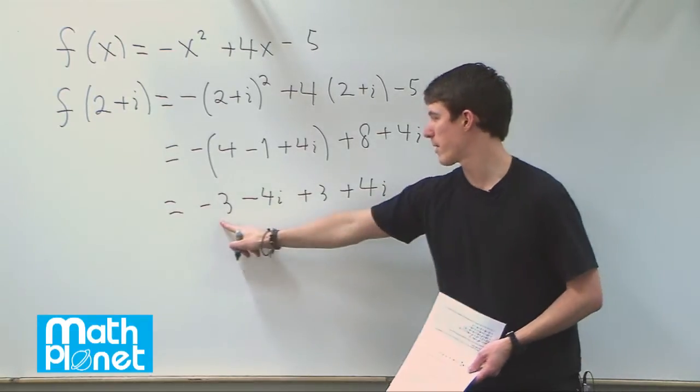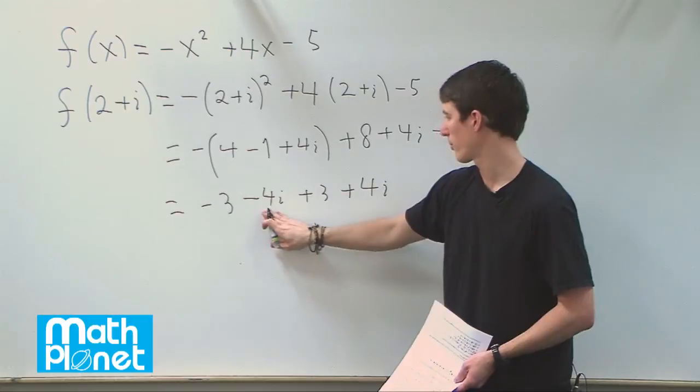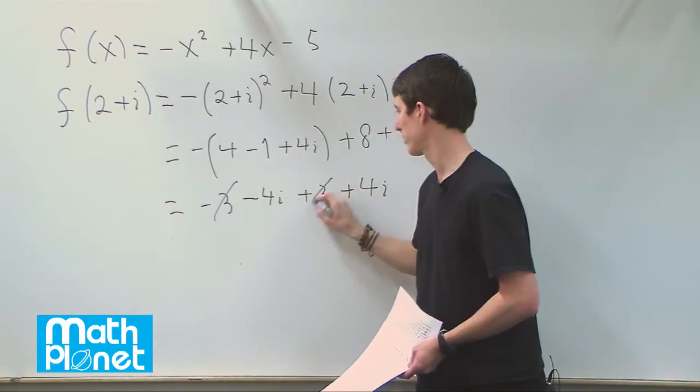So what do we have here? Minus 3, plus 3, minus 4i, plus 4i. So these cancel, and these cancel.